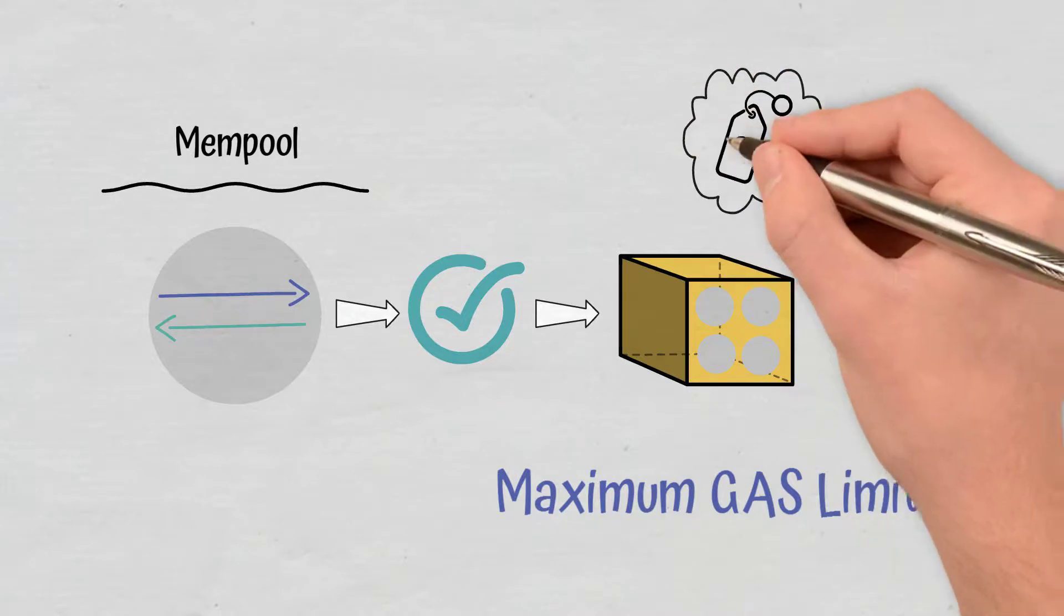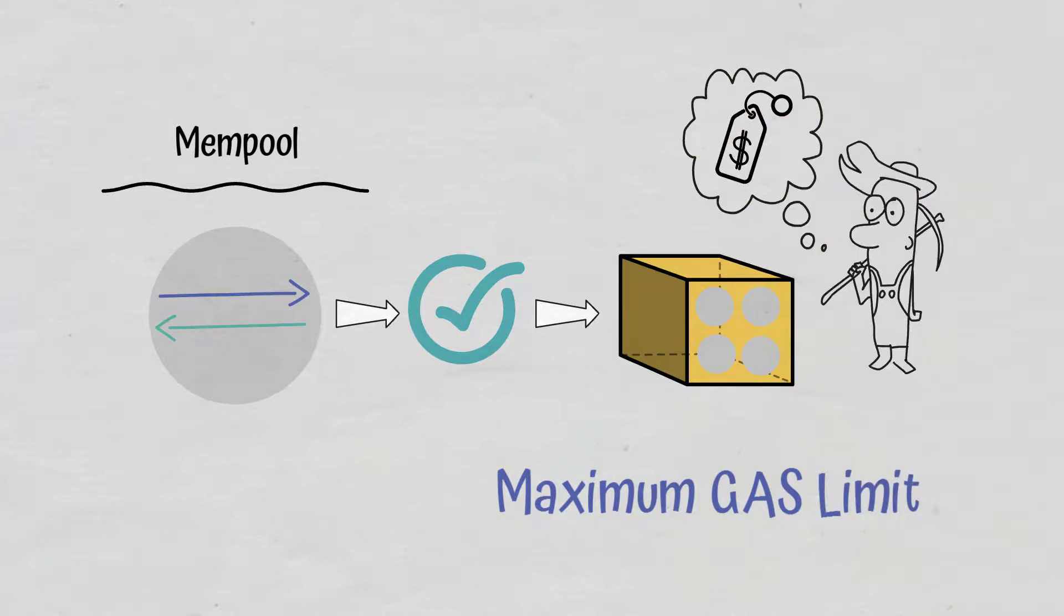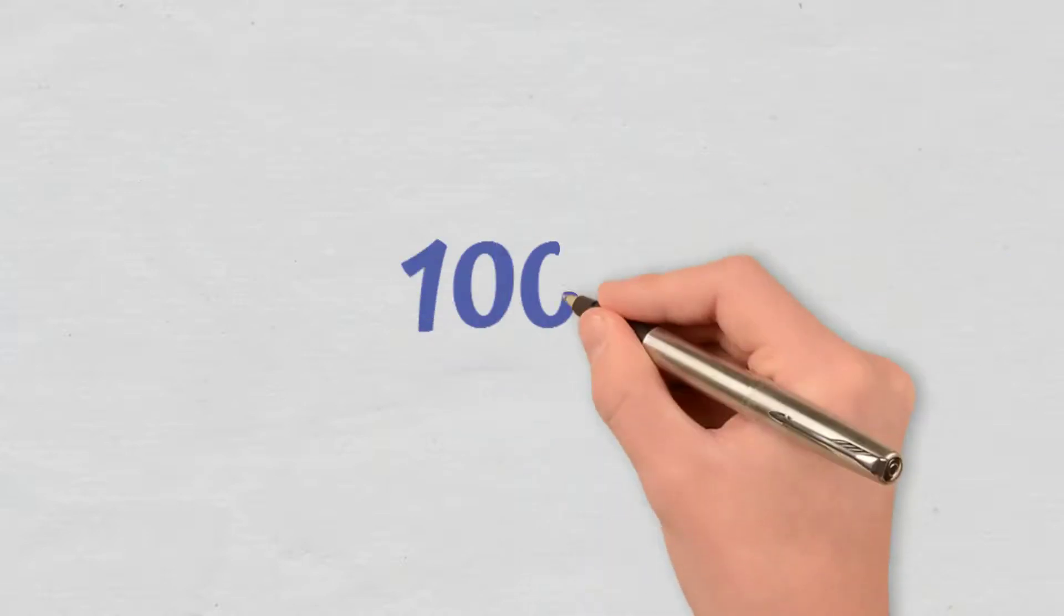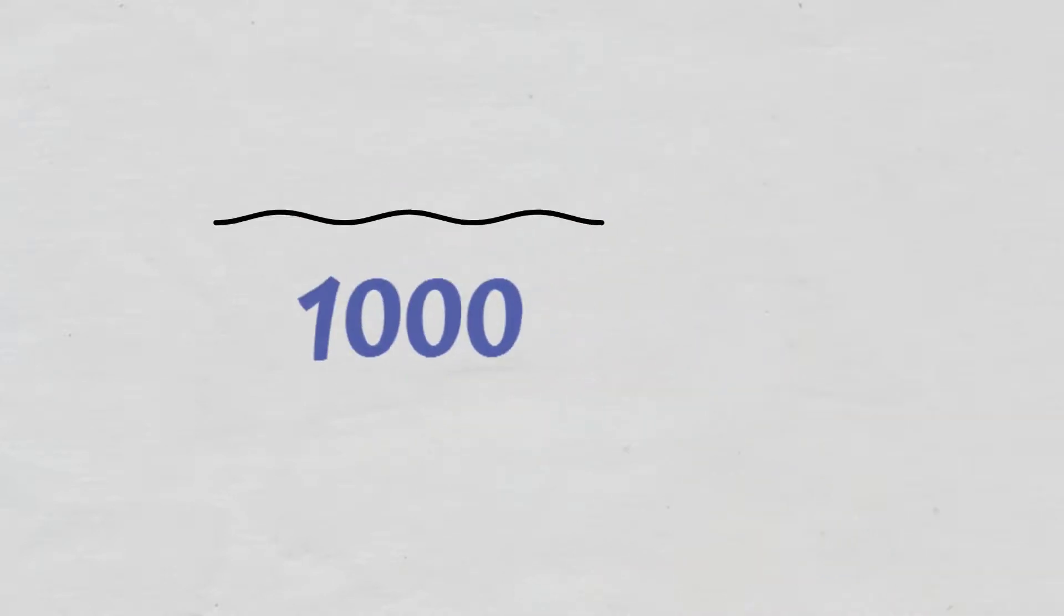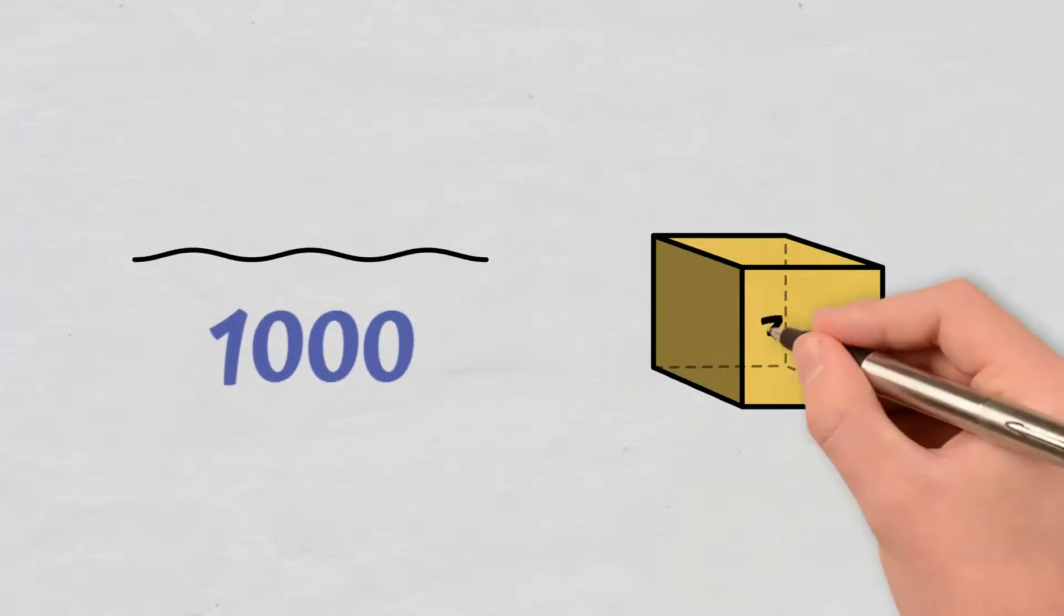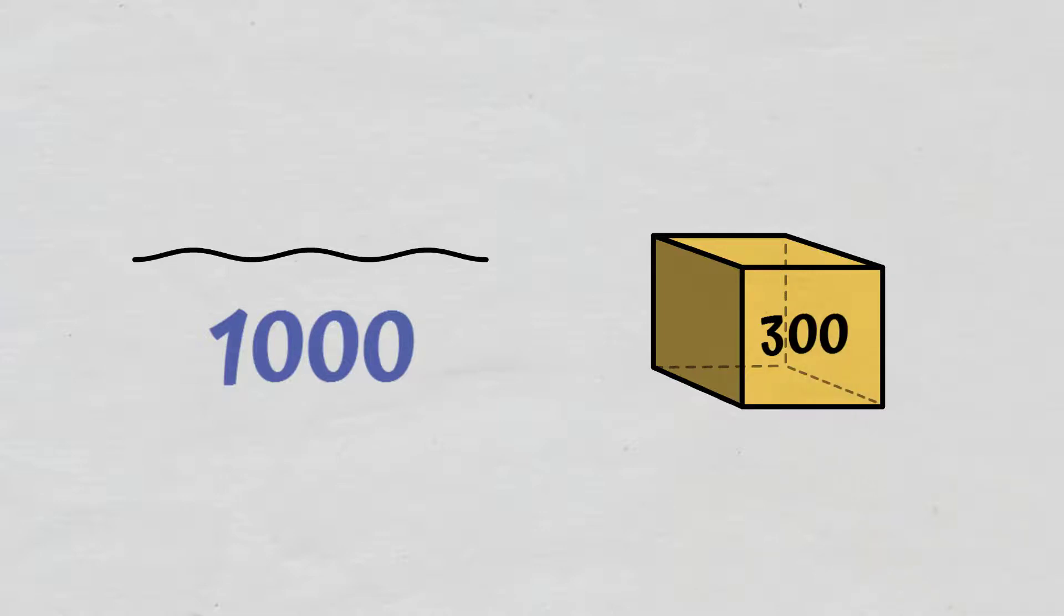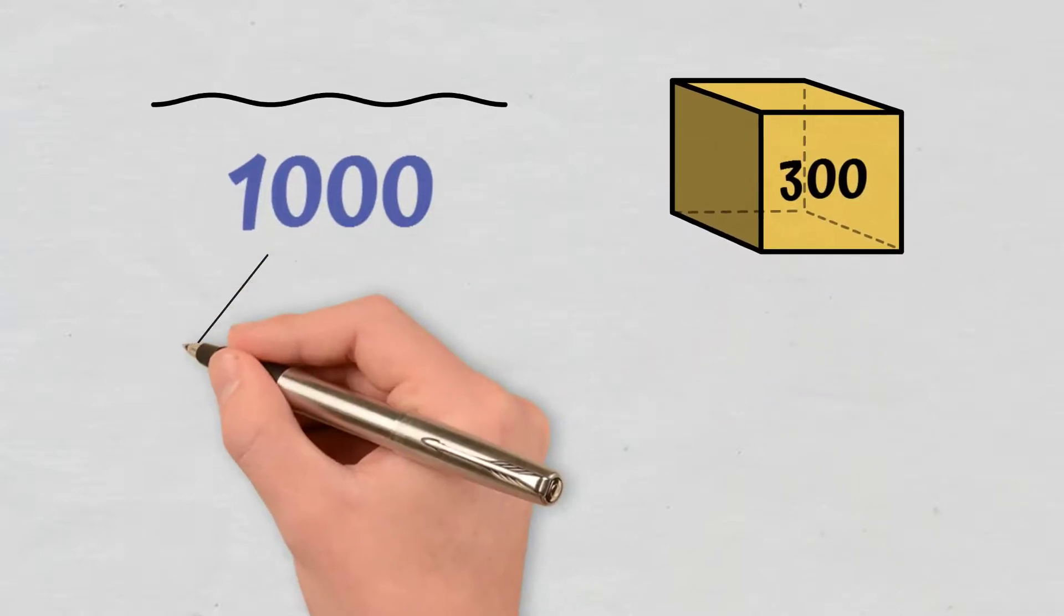Naturally, miners will prefer to validate transactions with a higher gas fee. For example, if there are 1,000 pending transactions in that mempool, but the limit allows the validation of only 300 transactions whose total gas falls within the maximum gas limit,